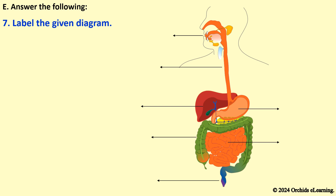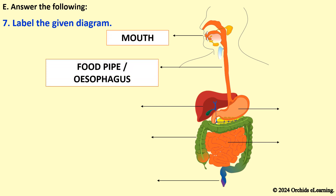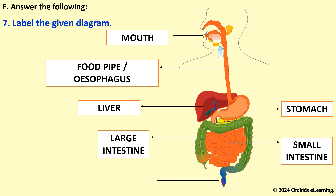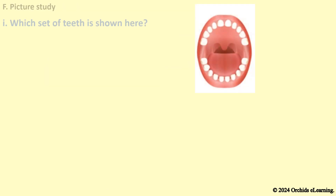Label the given diagram of the digestive system. The different parts are: Mouth, Food pipe (Esophagus), Stomach, Small intestine, Liver, Large intestine, and Anus.